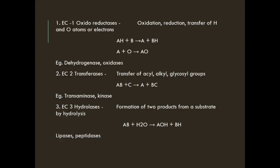Now we discuss the type of reaction catalyzed by each of the six enzyme categories. EC1, oxidoreductases, catalyze oxidation-reduction reactions involving the transfer of hydrogen, oxygen, or electrons. The reaction is: AH + B → A + BH (hydrogen transferred from A to B), or A + O → AO (oxygen added). Examples are dehydrogenases and oxidases.